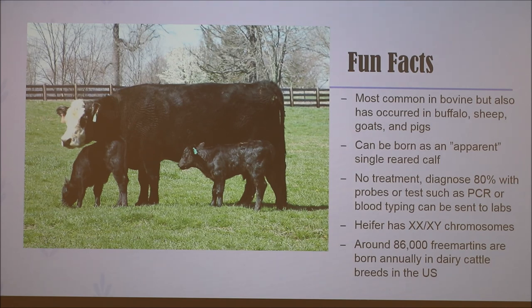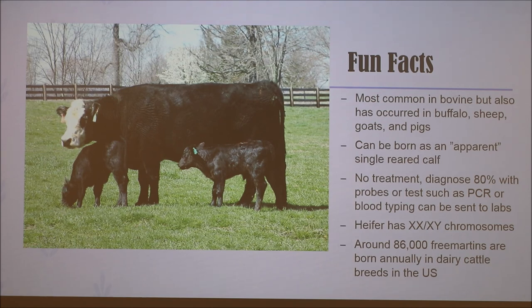Freemart in heifers have both XX and XY chromosomes, and around 86,000 of these are born annually in the dairy cattle industry in the United States. To wrap up, freemartinism occurs in 90% of heifers born twin to a bull calf, and these heifers shouldn't be kept in production — even though occasionally they will show signs of heat, they will still be sterile.